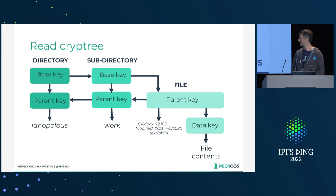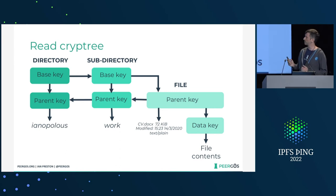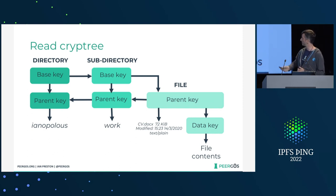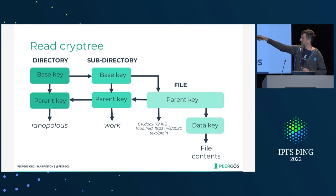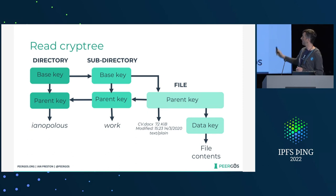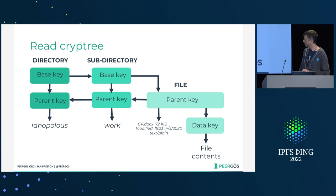The Cryptree is pretty simple — it's a tree of symmetric keys. If you have one key you can follow the arrows and links. It also gives everything a well-defined path, so if I just give you access to a file, you can follow the parent links to get the names. You have a path, but you still can't see if there are any other files in that directory — any siblings or anything like that.